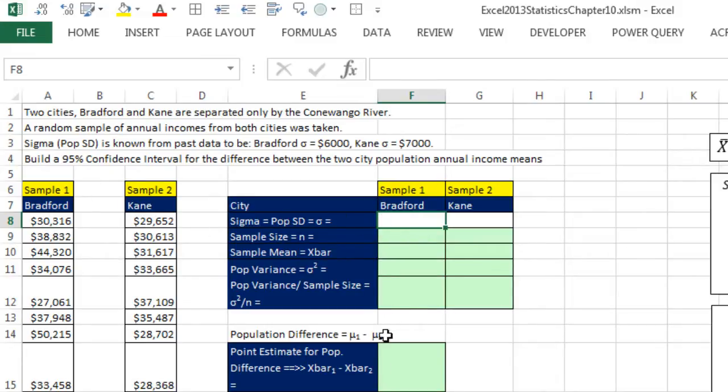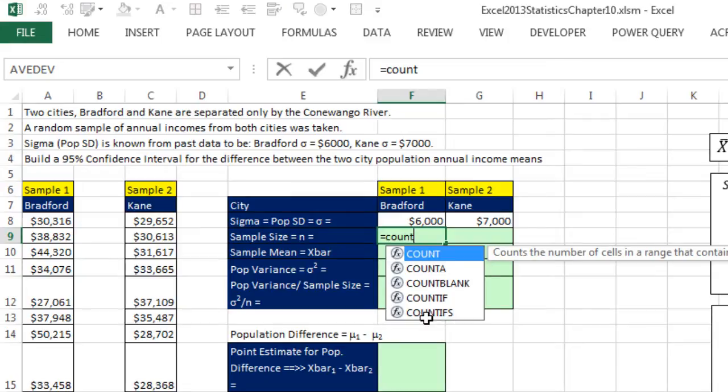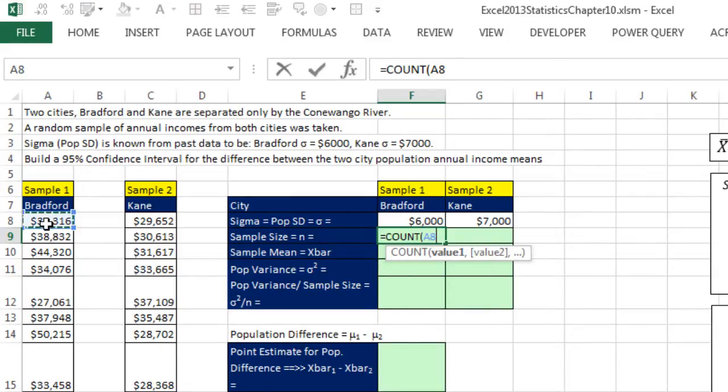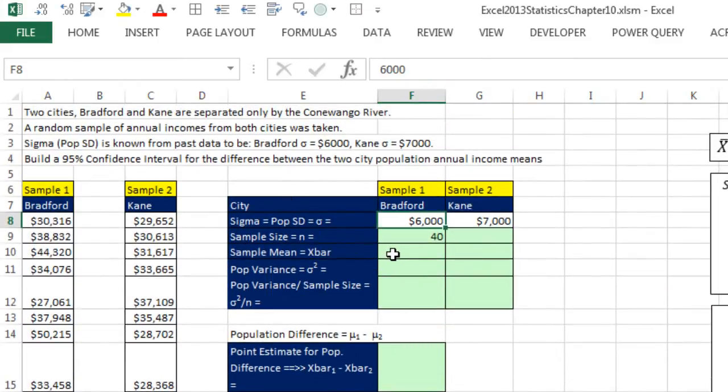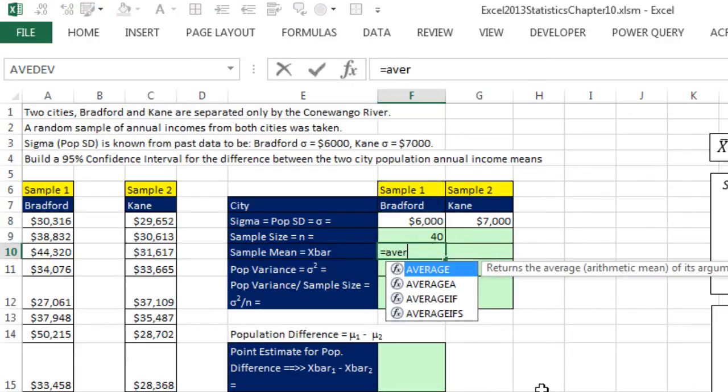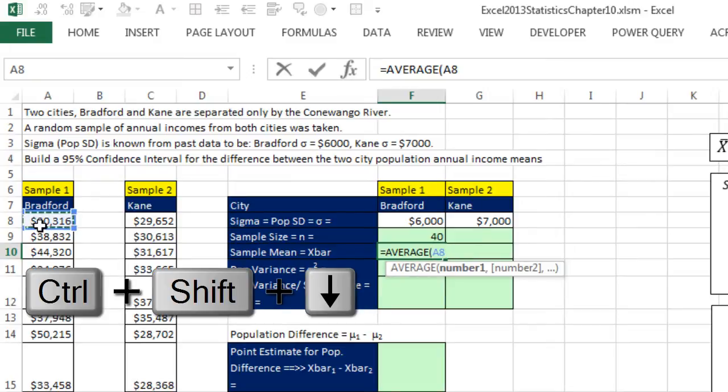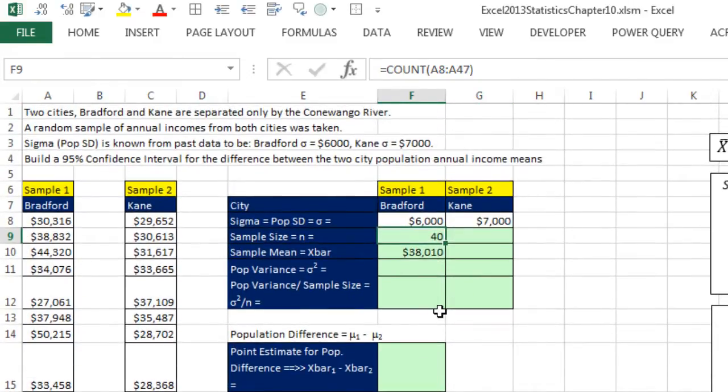Before we do that, right at the top, let's put our sigma. So sigma for Bradford is known, 6,000 tab. And for Kane, it's 7,000, and Enter. Now we can calculate our sample size. We're counting numbers, so I'm using Count. I'm going to go for the first one, Control-Shift-Down Arrow, Shift-Enter. So we have a sample size, and that's N1 of 40. Now we'll calculate the mean, average, Control-Shift-Down Arrow, Shift-Enter. So we have a sample mean of 38,010.